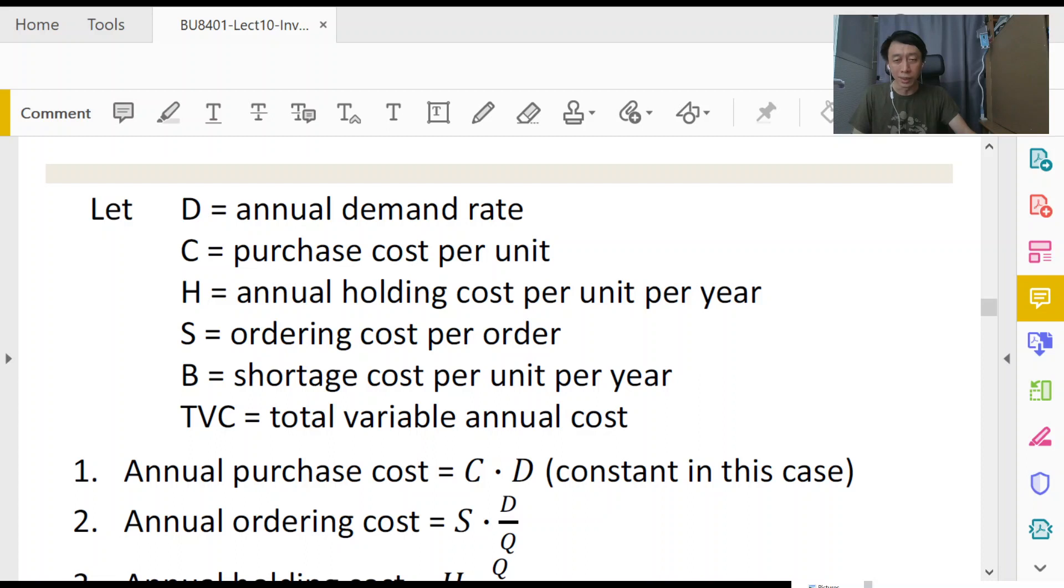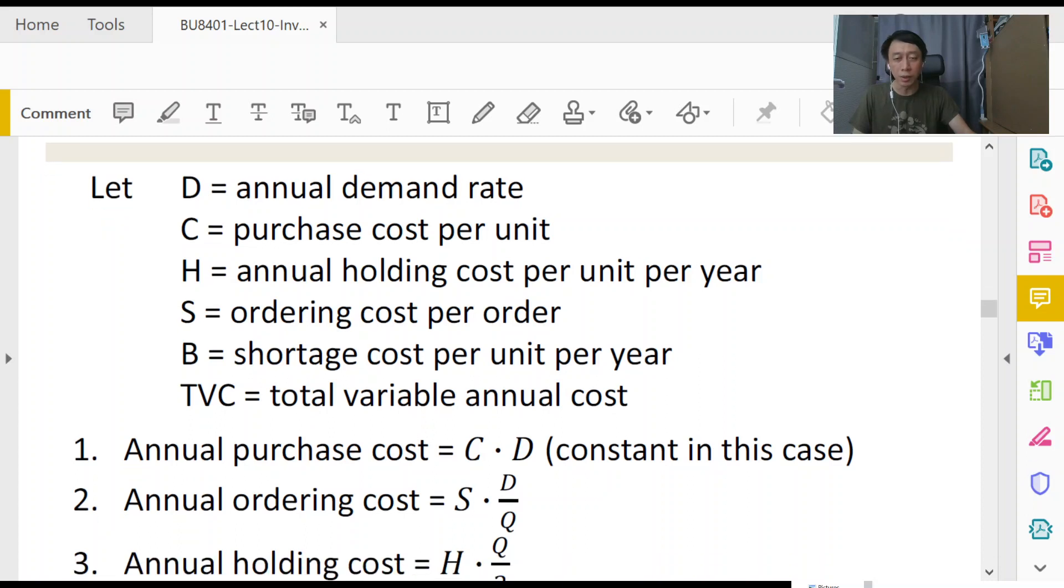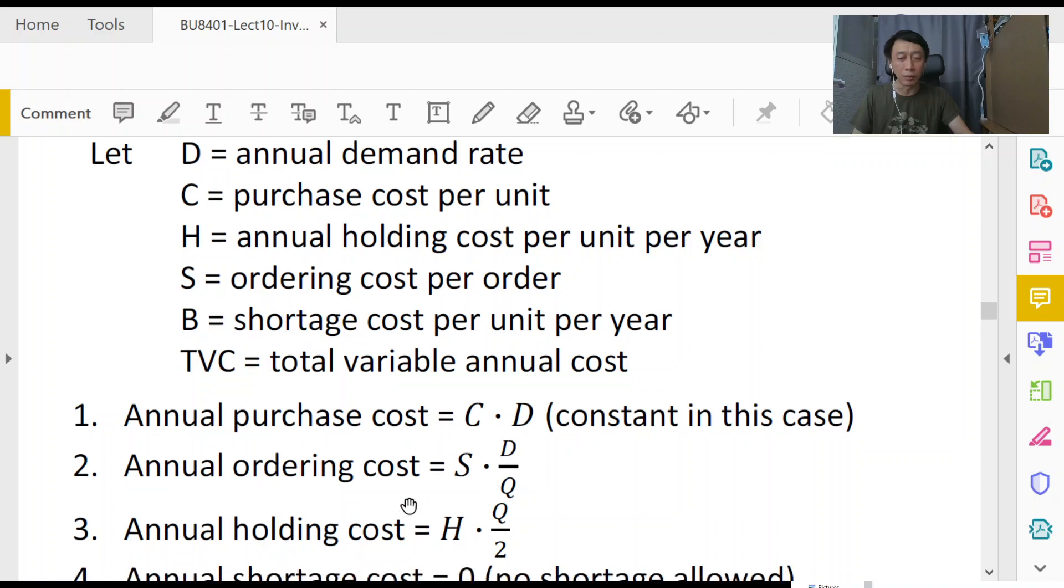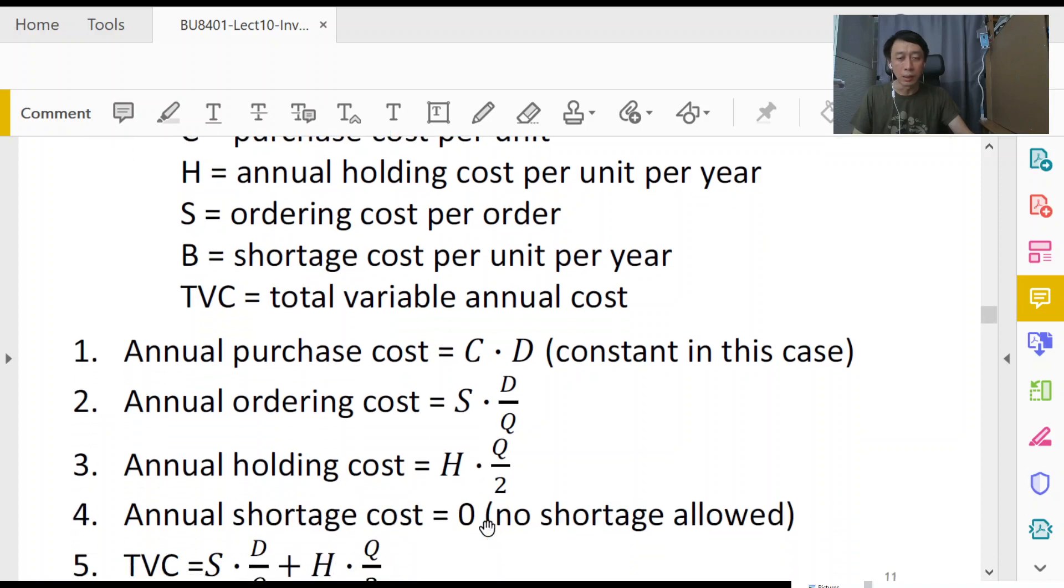Purchase cost is going to be c times d. No matter how we slice up the d, whether half or a third or quarter, or lump them together as a single d, we do not get discount. So annually we will still incur c times d, c being the unit cost. Annual ordering cost we work that out, annual holding cost we have worked it out, and the total cost is this.